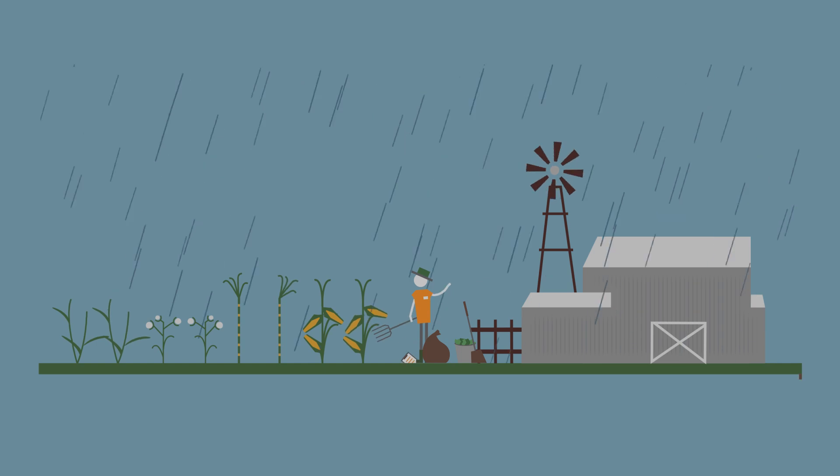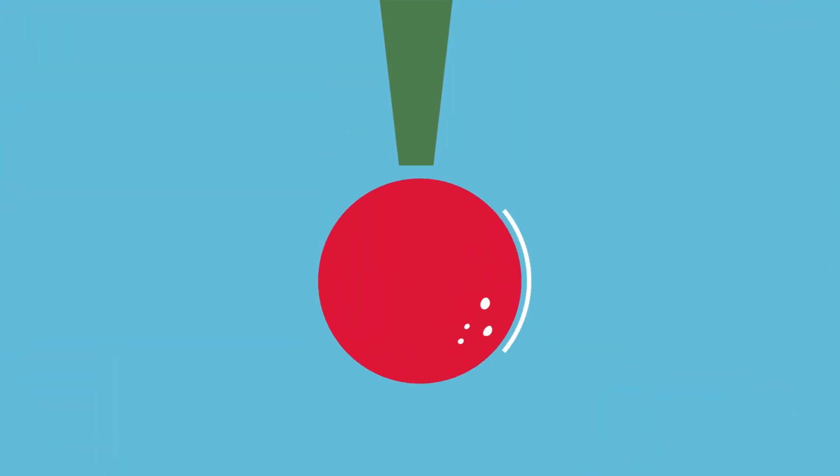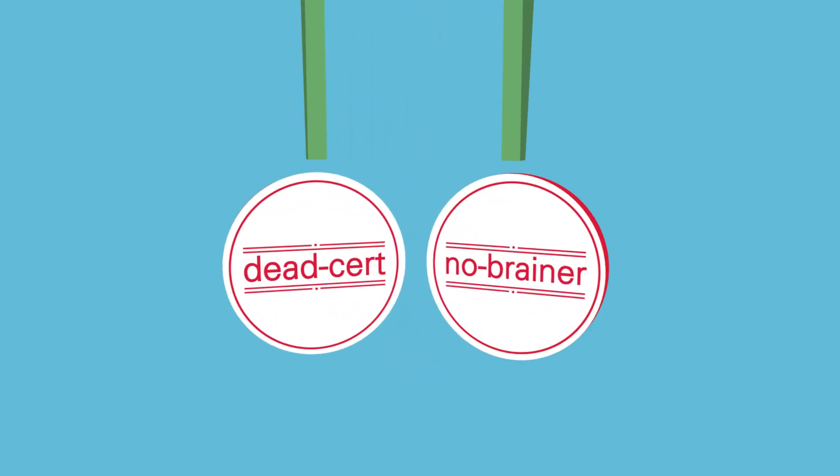And then there's the weather, disease, government policy, global markets. Wouldn't it be nice if just one thing was clear-cut? A dead cert. A no-brainer. Well, now there is. Drip irrigation.